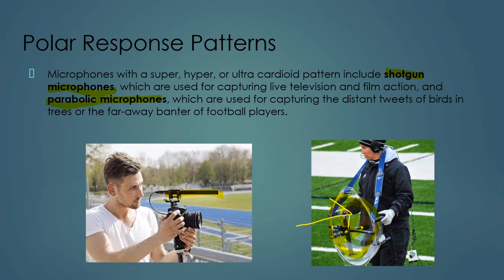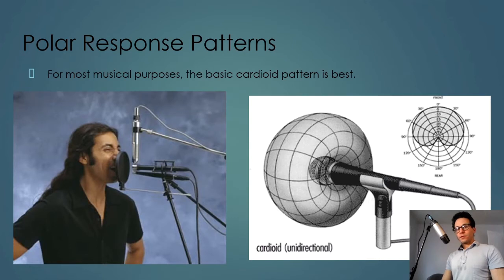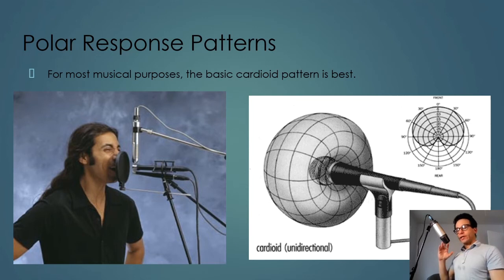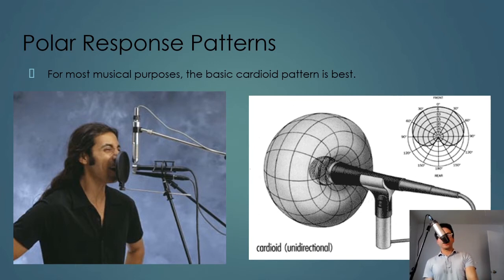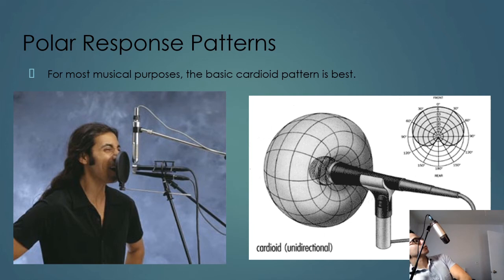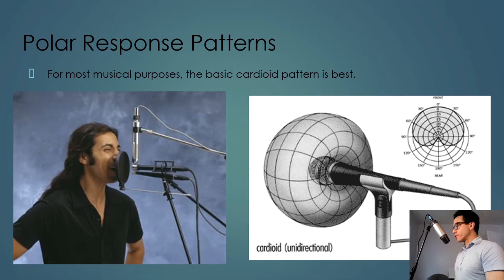A parabolic microphone is a shotgun microphone where the mic is pointed into the apex of a parabolic dish. The dish itself acts like a giant earlobe collecting all the sounds. This type of microphone is extremely sensitive, especially at a distance — it allows you to capture the banter of football huddles or the tweets of birds way up in the rainforest canopy. For most musical purposes, the basic cardioid pattern is best because it's very sensitive in the direction it's pointed and rejects sounds from the sides and the back.